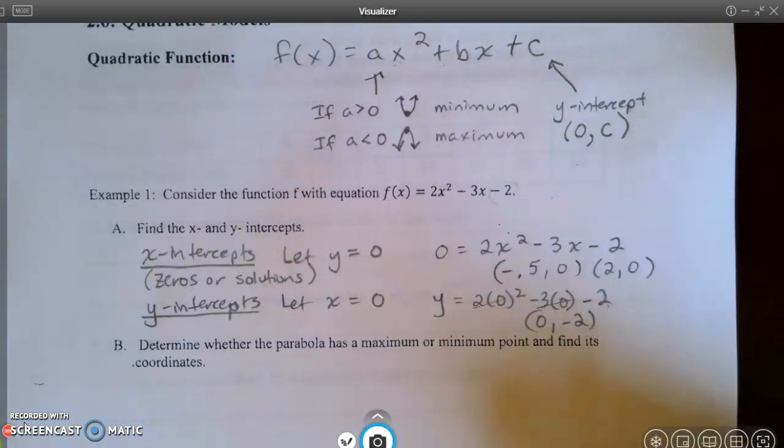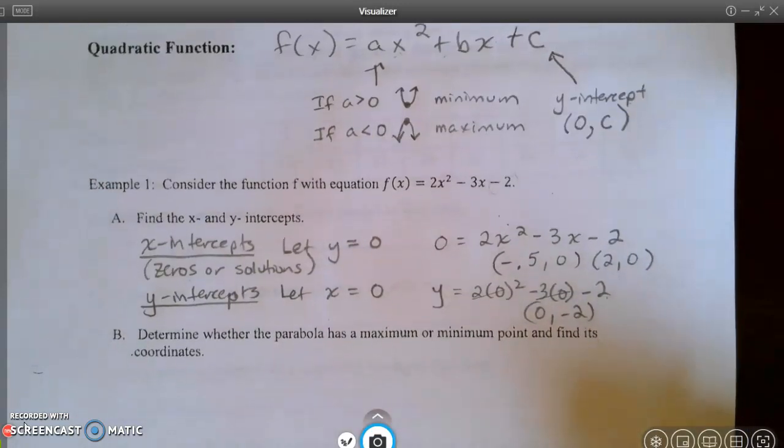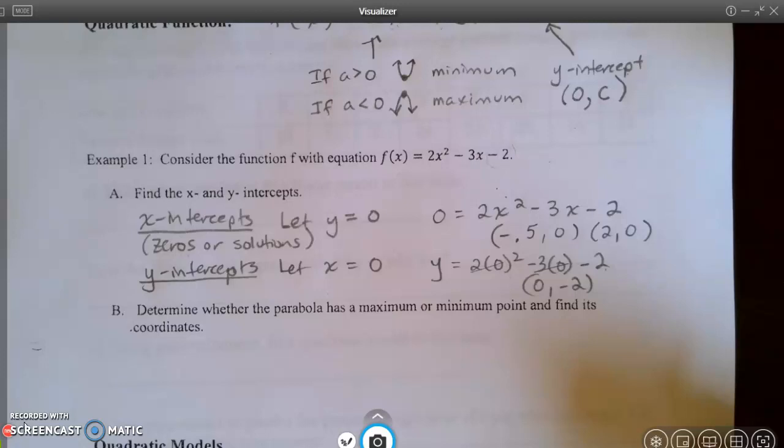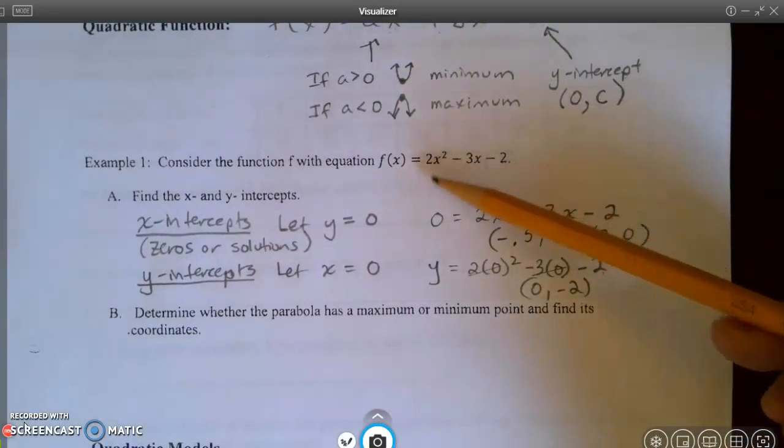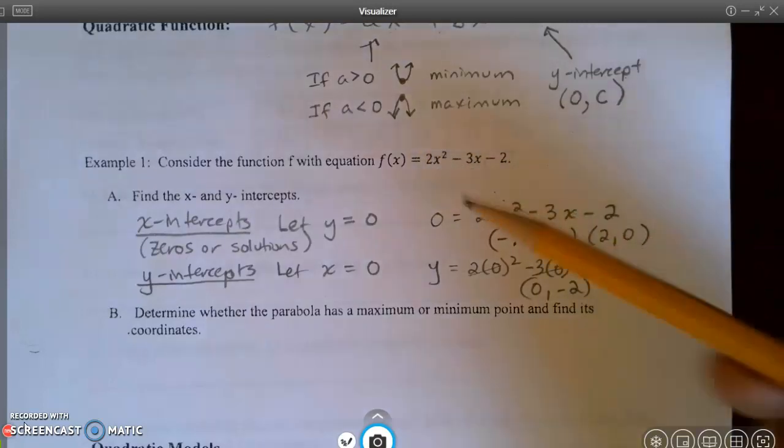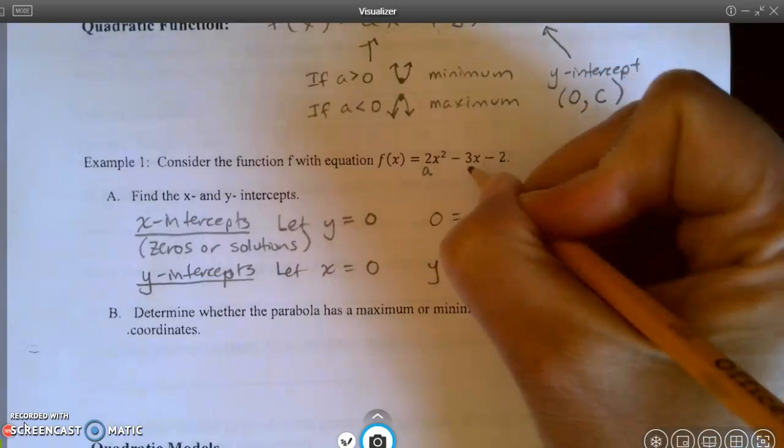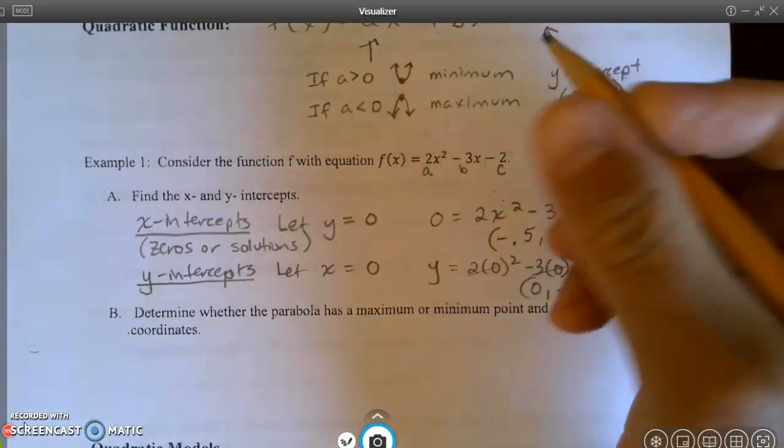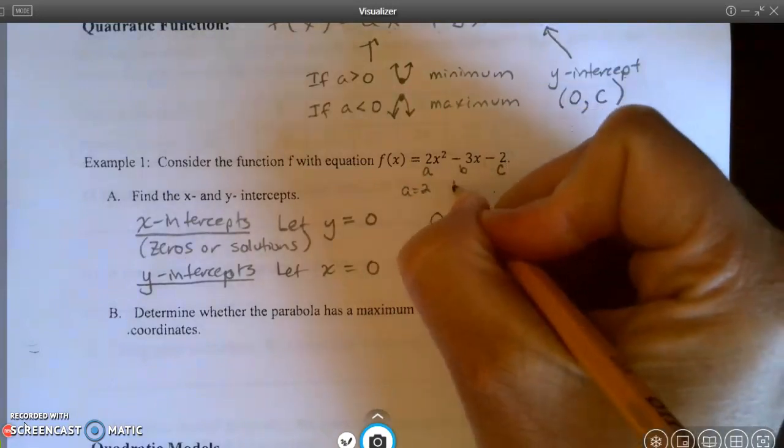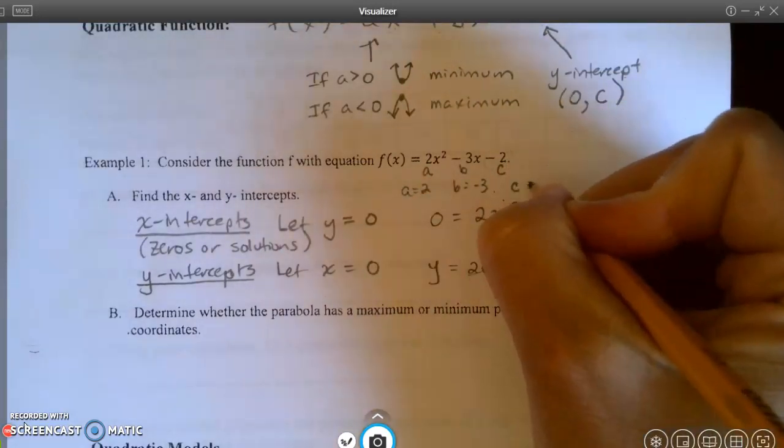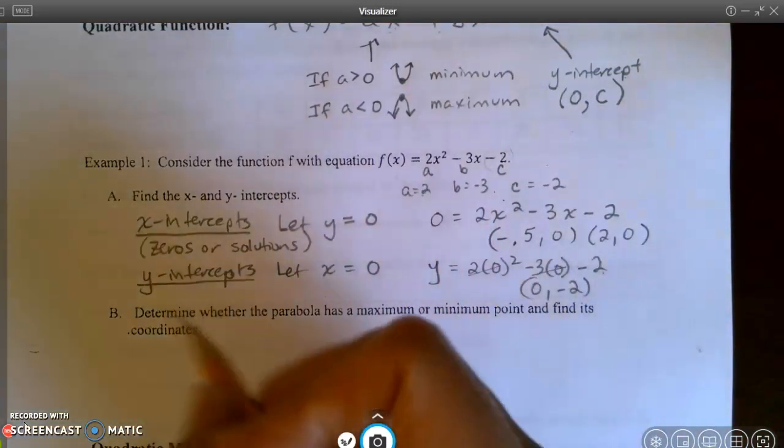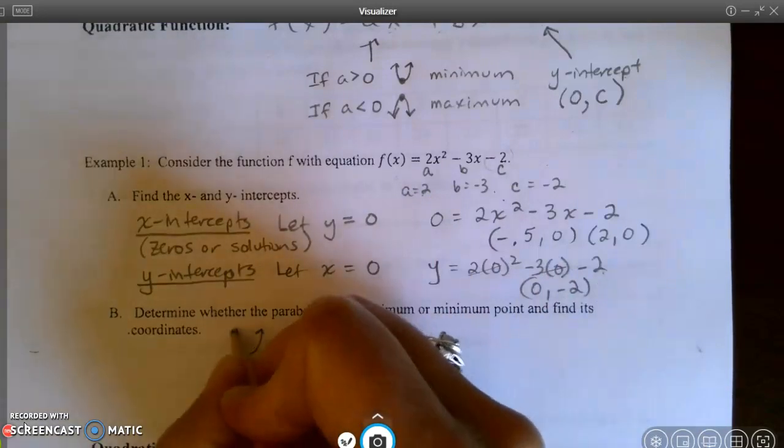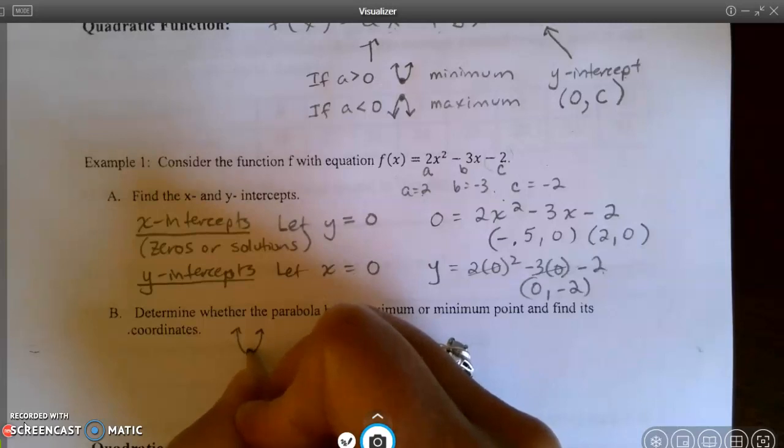Now the next one, letter B, says determine whether the parabola has a maximum or a minimum point, and find its coordinates. So when I first look at this, let's say that I had not graphed it. When I look at this parabola, I look at its a value. It might not be a bad idea to label that this is a, this is b, and this is c. In other words, a equals 2, b equals -3, and c equals -2. So, since the a value is positive, that means this quadratic opens up, which means it's going to have a minimum value.